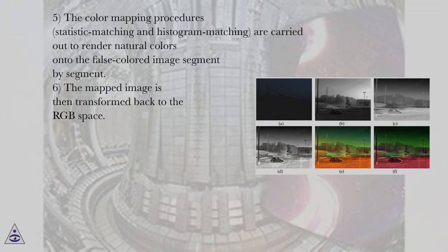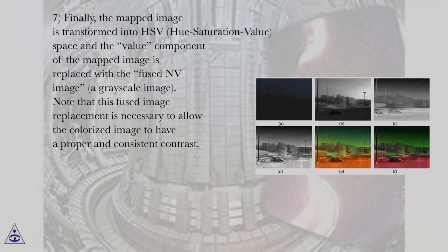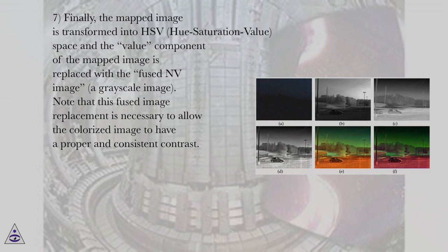Step 5: The color mapping procedures, statistic matching and histogram matching, are carried out to render natural colors onto the false colored image segment by segment. Step 6: The mapped image is then transformed back to the RGB space. Step 7: Finally, the mapped image is transformed into HSV (hue saturation value) space and the value component of the mapped image is replaced with the fused image, a grayscale image. This fused image replacement is necessary to allow the colorized image to have a proper and consistent contrast.